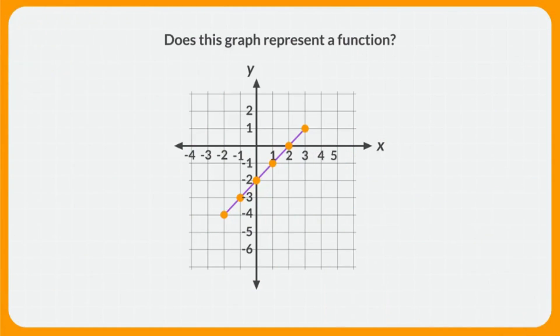Together, let's figure out if this graph represents a function. This point is at negative 2, negative 4. This point is at negative 1, negative 3. And this point is at 0, negative 2. So far, each of these points has a different input and a different output, so this is a function.